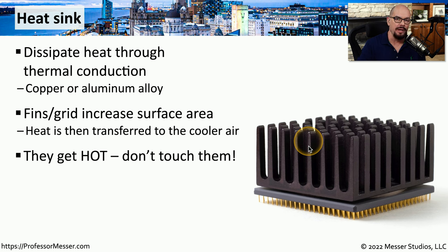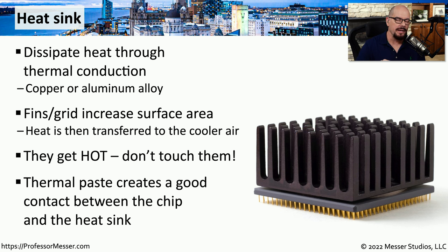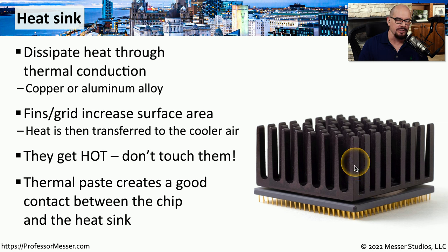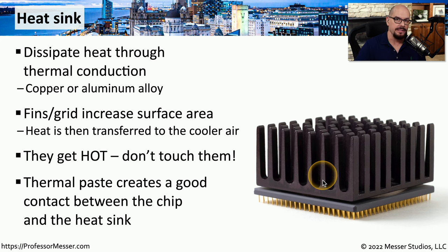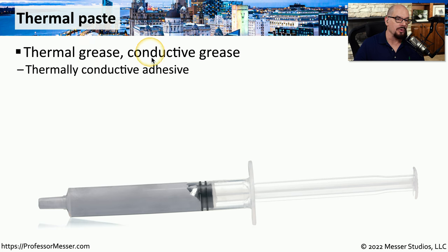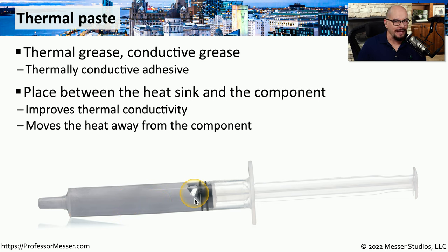So be very careful when you're working on a system, especially one that you've recently turned off, because that heat sink could be very hot. An important characteristic of the heat sink is that it's able to receive all of the heat from a component — like the CPU we see here — and dissipate that heat into the cooler air. To be able to make an efficient thermal connection between the component itself and the heat sink, we need to use thermal paste. You'll sometimes hear thermal paste referred to as thermal grease or conductive grease, but it's all effectively the same material. This is what you'll put in between the heat sink and that very warm component, creating a very good bond that allows heat to be easily taken away from the component and dissipated into the cooler air.